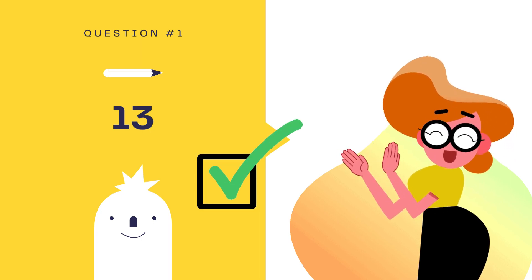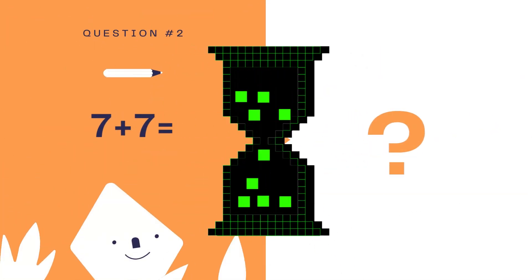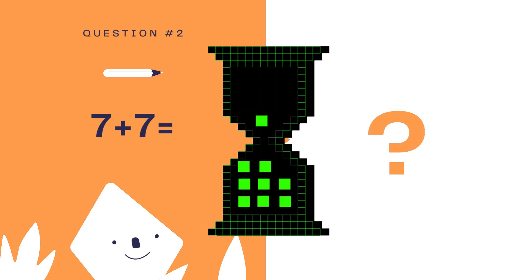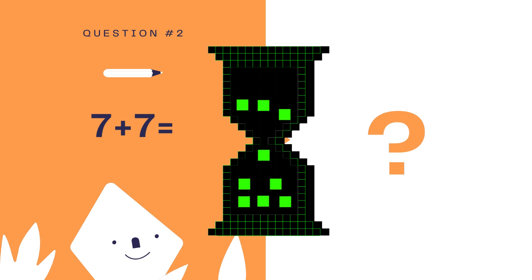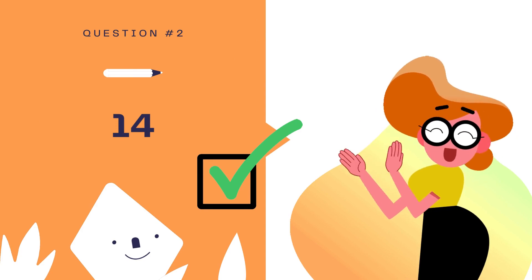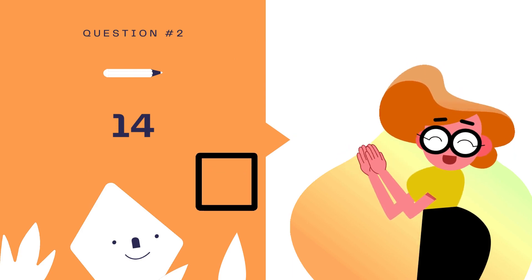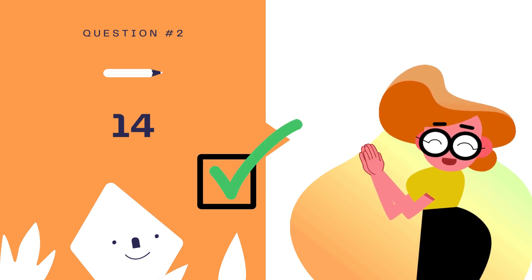Now let's move to the next question: 7 plus 7. Quickly count. Let's check the answer. The answer is 14. Good job if you get the answer correctly.